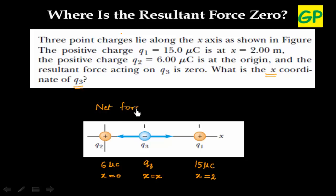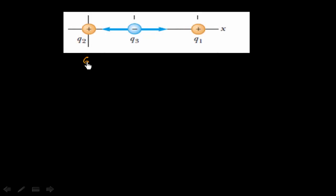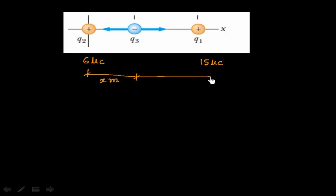So net force on Q3 is zero. Let us say this is the 6 micro coulomb charge and this is the 15 micro coulomb charge. Let us say the distance from Q2 to Q3 is x meters, then the distance from Q3 to Q1 has to be 2 minus x meters. Q2 will attract Q3 in one direction — let us call this force F32 — and since Q1 is positive and Q3 is negative, there is another attractive force in the opposite direction.